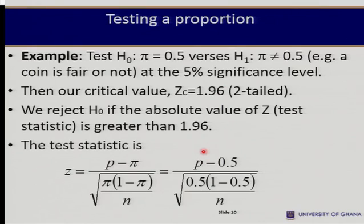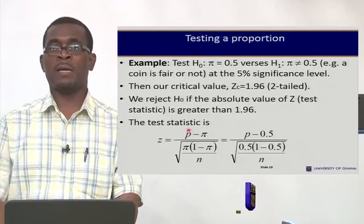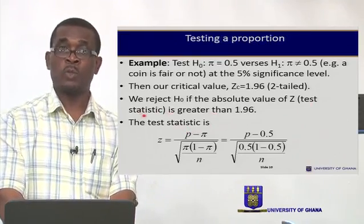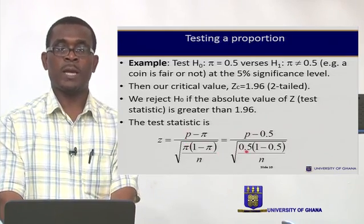Let's take a simple example. We want to test the hypothesis pi equals 0.5 versus pi not equal to 0.5 — in other words, testing whether a coin is fair or not. A fair coin has probability of heads of 0.5 and tails of 0.5. Testing at 5%, the critical value will be 1.96 because it is two-tailed. We reject the null if the absolute value of our Z is greater than 1.96.